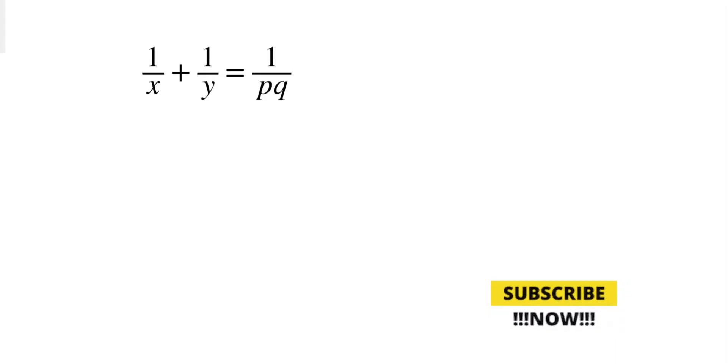Hello everyone, today we are going to solve this Diophantine equation where p and q are prime numbers. When p and q are given, we have to find all positive integers x and y such that this equation satisfies.